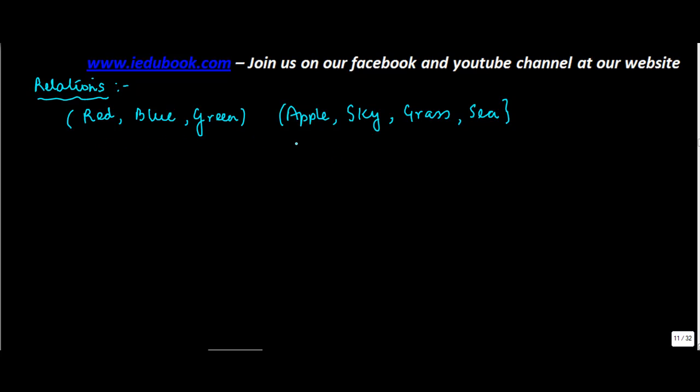If you were to form the ordered pairs of these sets, let's denote these. The number of ordered pairs that you will get will be how many? Three into four. This we know because it's the product of number of elements of this set into this set.